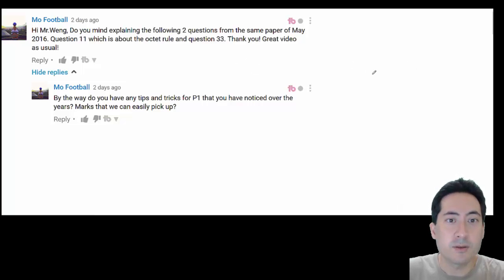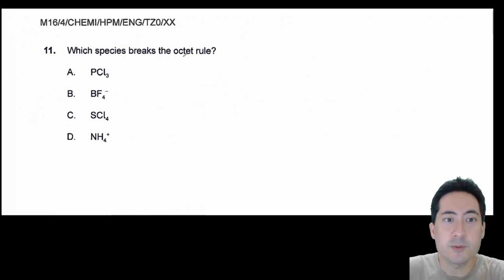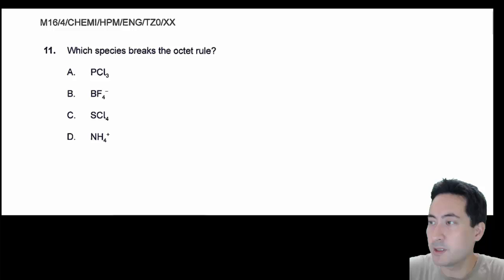Okay, I'm just going to answer some quick questions from MoFootball. This is the first one, question 11, and then there's question 33, and then some paper 1 hints. So the first one here is question 11, which species breaks the octet rule? Now, you always need to draw these out,